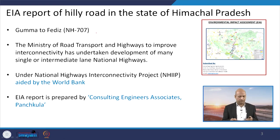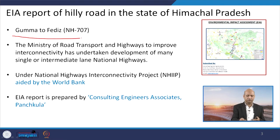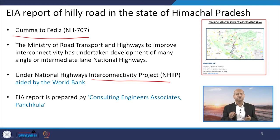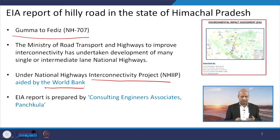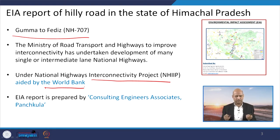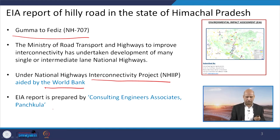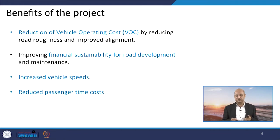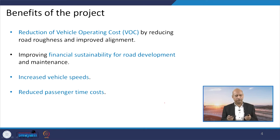This report is basically on the National Highway from Guma to Faidish in Himachal Pradesh, under the National Highway Interconnectivity Improvement Project (NHIIP), which has been funded by the World Bank and the Ministry of Road Transport and Highways to improve interconnectivity within the state as well as with interstate highways. One consulting engineering associate prepared this EIA report.